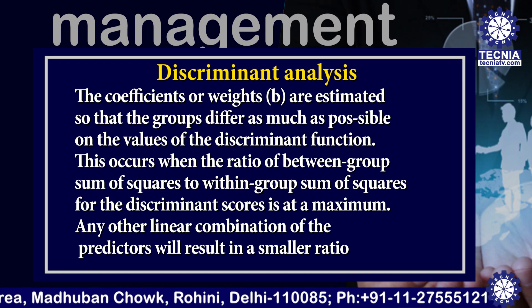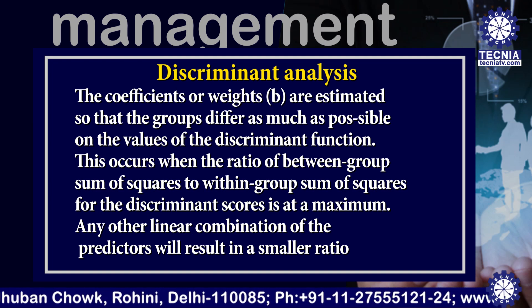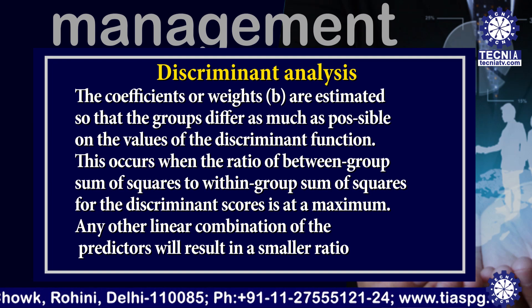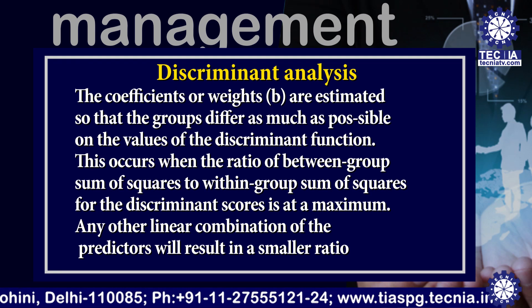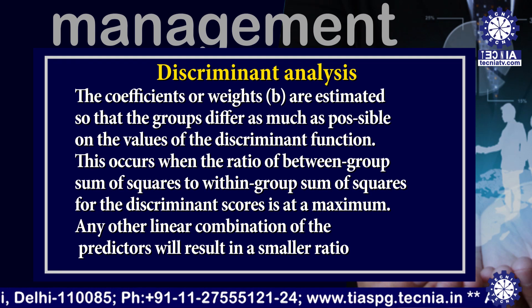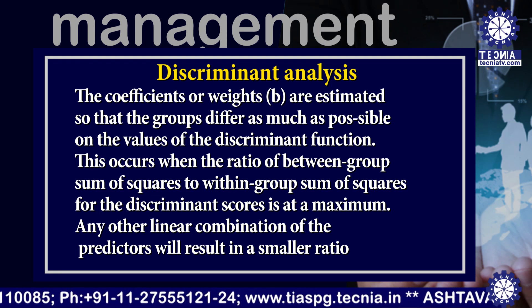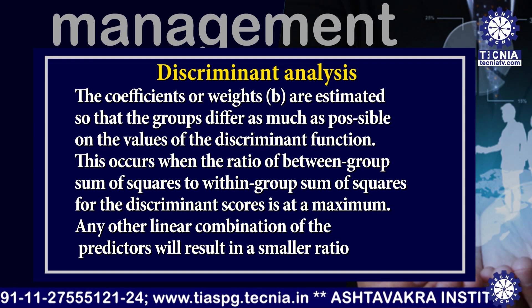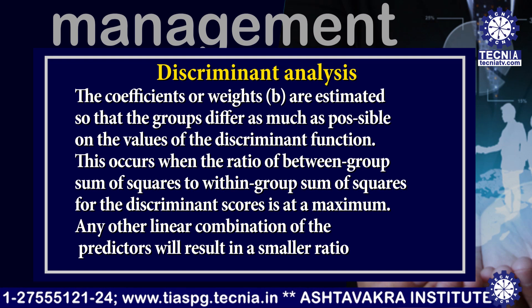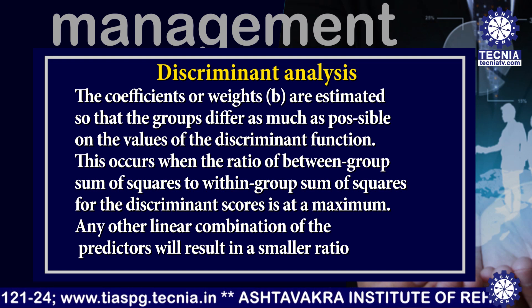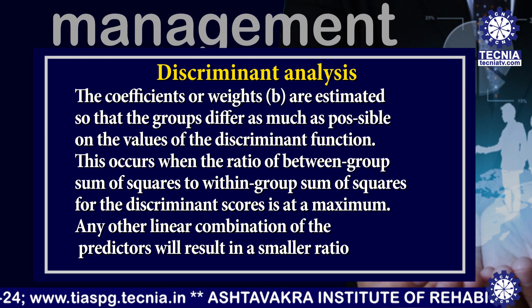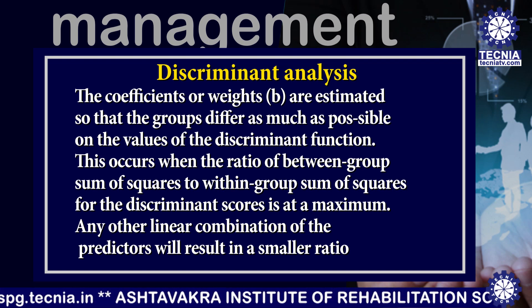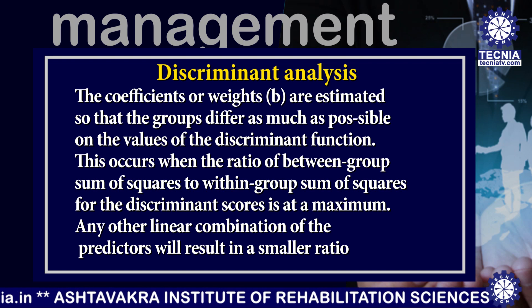The coefficients or weights are estimated so that the groups differ as much as possible on the value of the discriminant function. This occurs when the ratio of between-group sum of squares to within-group sum of squares for the discriminant score is at a maximum. Any other linear combination of the predictors will result in a smaller ratio.